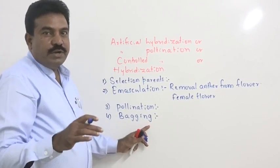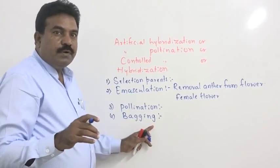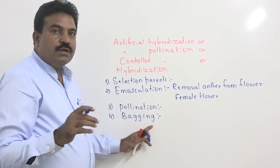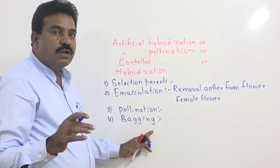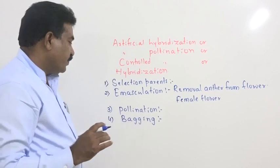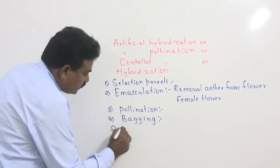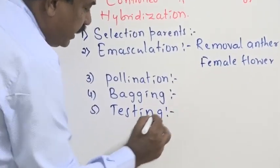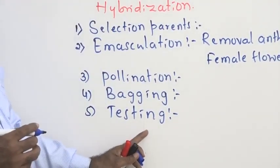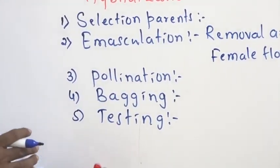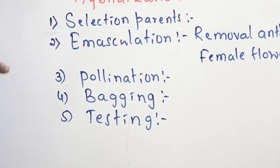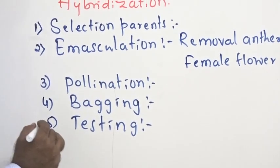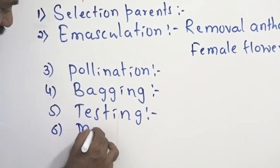Bagging is nothing but covering of flower with the help of a polythene bag, cotton bag or a muslin cloth bag, what we call the name bagging. Then, next process is testing. Whatever the seeds we obtain, we have to test whether they are viable, whether they are advantageous over the previous variety. And finally, we go for marketing.